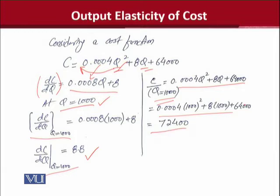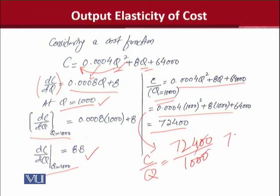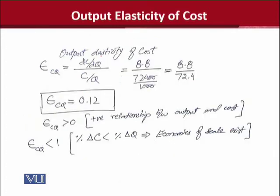So we found the cost function, now which can be transformed into the average function. Aap isko ishi step mein kar sakte hai, by dividing it with output, which is 72.4, or it can be seen in the next slide as well. Here we are putting the values that we calculated in the last step. We found the marginal function, and we also calculated this value, that was the average cost, that was 72.4.